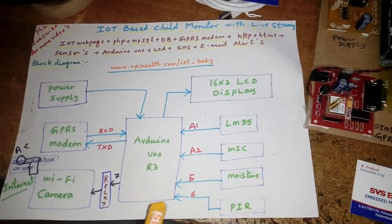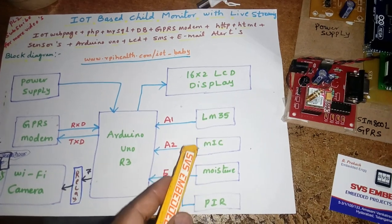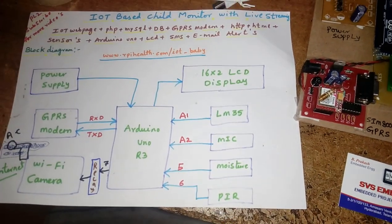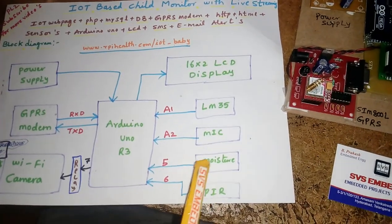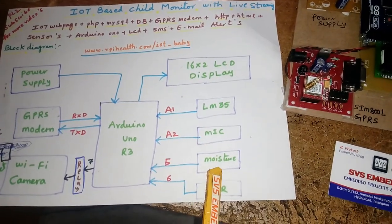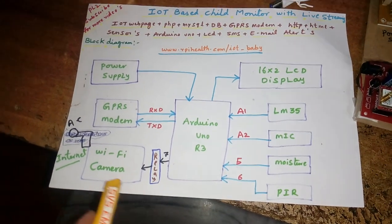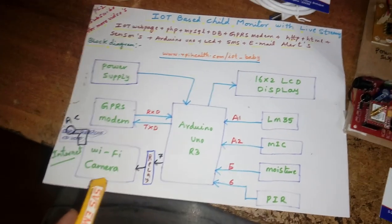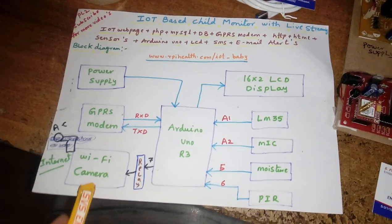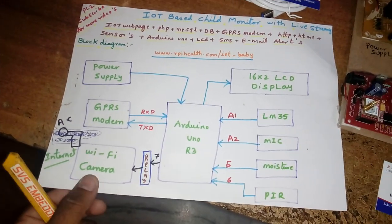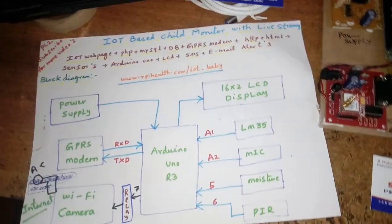We are using four sensors: LM35 temperature sensor, mic for baby cry detection, moisture sensor for diaper detection, and one PIR sensor. There is also a 16x2 LCD display. A relay coil is used to control the Wi-Fi camera — the camera can be turned on and off via an Android app.